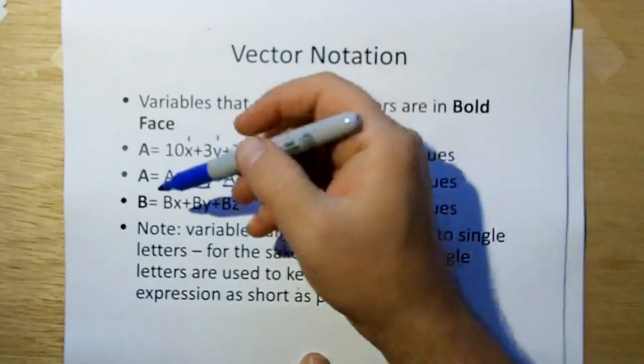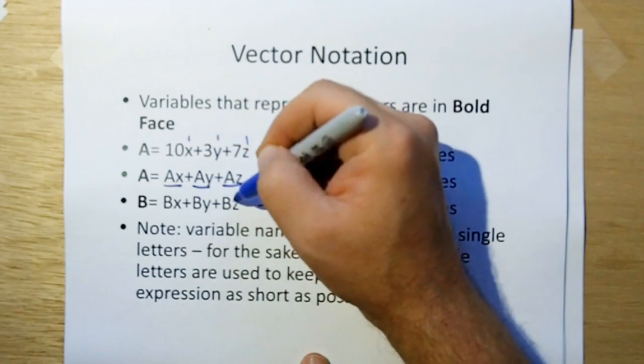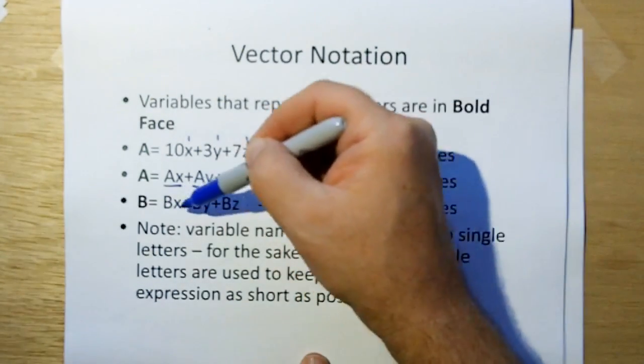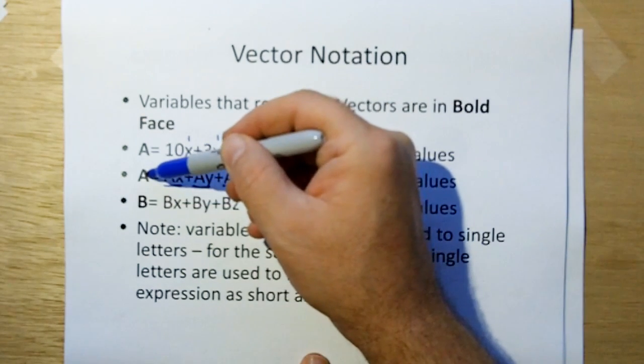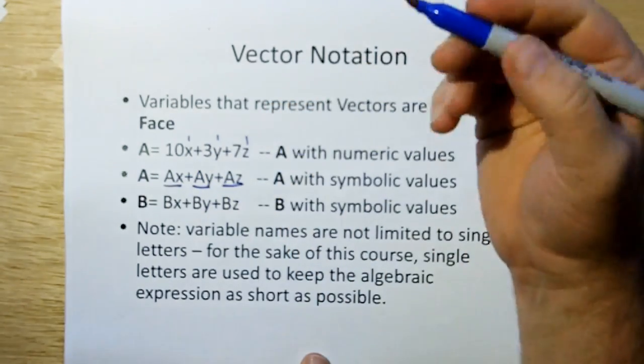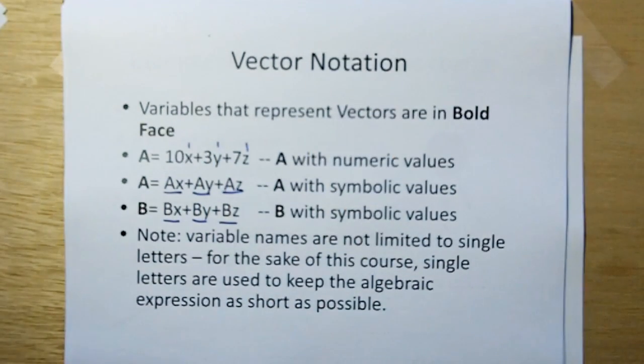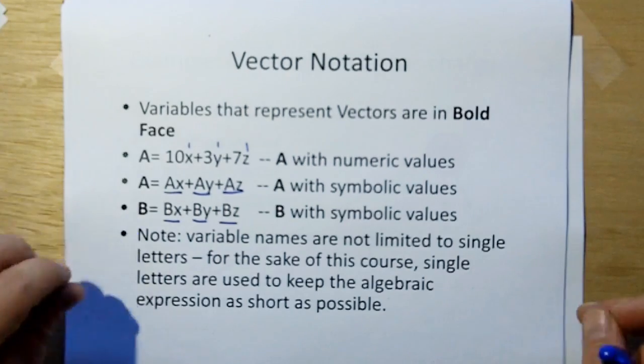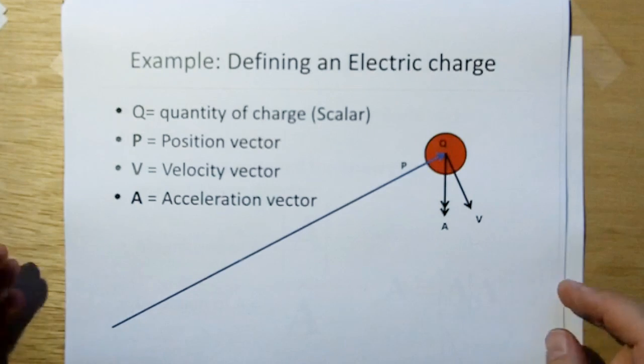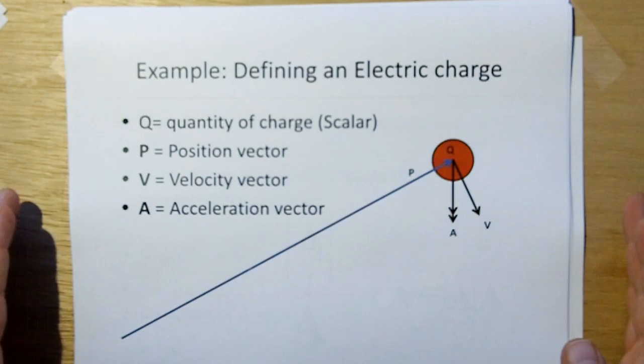And just so you don't get blindsided, variable B would have the same thing, the component of B in the x direction, the component of B in the y direction, the component of B in the z direction. And so that any variable, any letter you use to represent a vector would be represented this way. The reason why we do this is because later on, we're going to do something like A multiplied by B, and we're going to have Ax's and By's all mixed together when we do the derivations for Q vectors, so this notation is going to be very important. And again, these variables are not limited to single letters for the sake of this course. Single letters are used to keep the algebraic expressions as short as possible.